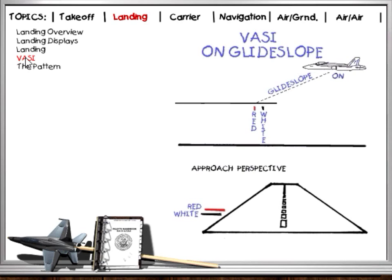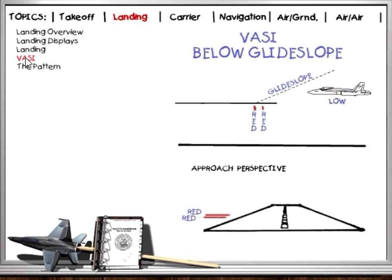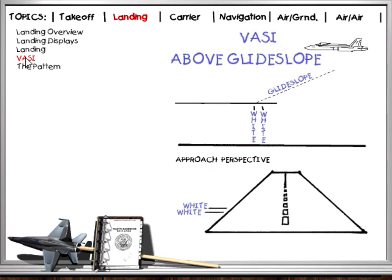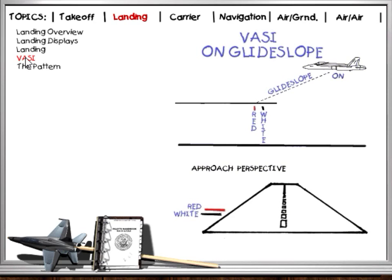VASI provides glide slope information by filtering light at different angles. The color you see will vary as your aircraft position varies relative to the glide slope. When aligned on glide slope, the bottom two light bars will be red over white — ignore the top light bar. If you drop below glide slope, both lights will turn red, indicating you're too low. Correct by decreasing your descent rate, flying up to the glide slope, then re-correct to fly down glide slope to touchdown. White over white lights indicate you have climbed above the glide slope. Increase your descent rate until you see red over white, then adjust your velocity vector to maintain correct glide slope.